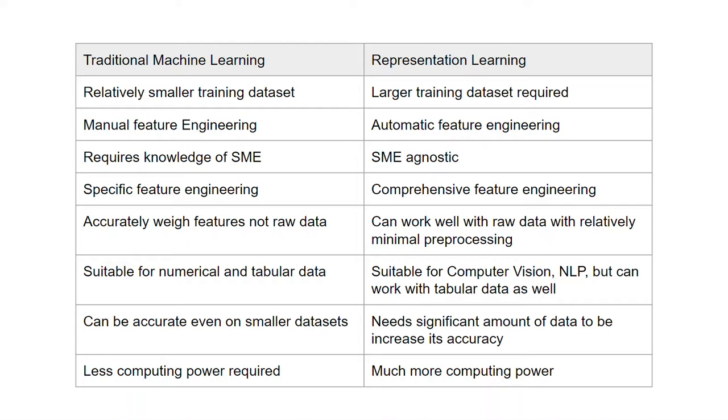Traditional ML is suitable for numerical and tabular data. Representational learning is suitable for use cases such as computer vision, NLP, but can work well with tabular data as well.